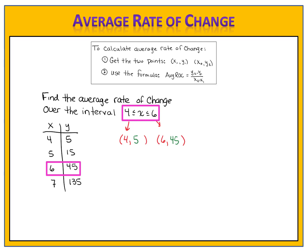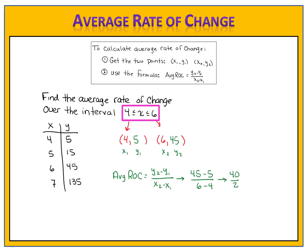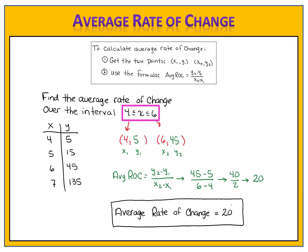Now we have the two points needed to calculate the average rate of change. We label the points x1, y1 and x2, y2. We write our formula and then do the substitution: 45 minus 5 divided by 6 minus 4. We perform the computations — 40 divided by 2 — and reduce the fraction: 20. The average rate of change over the given interval is 20.